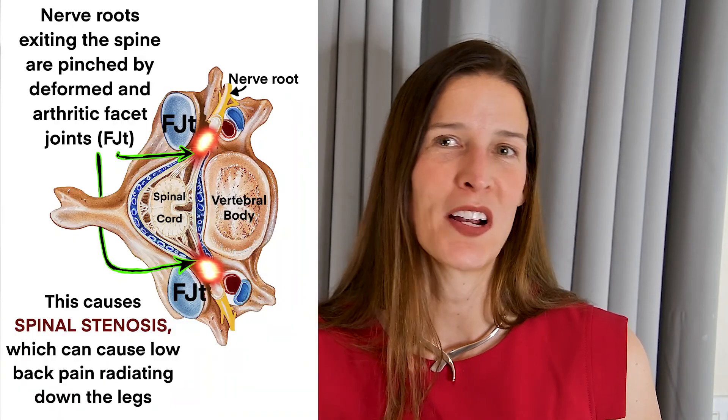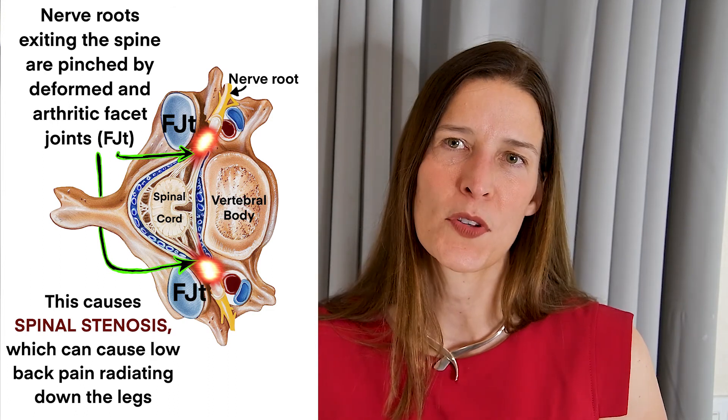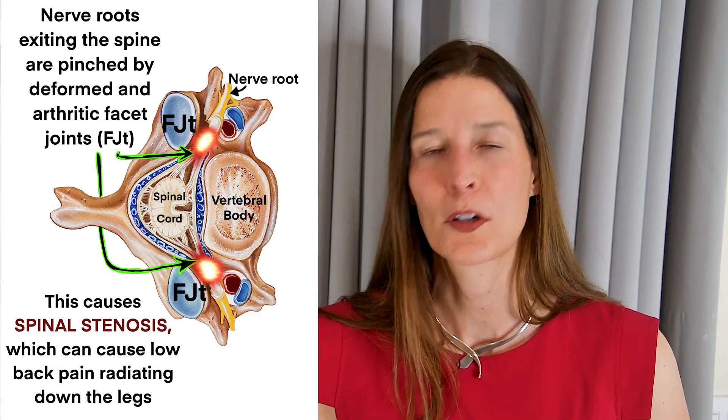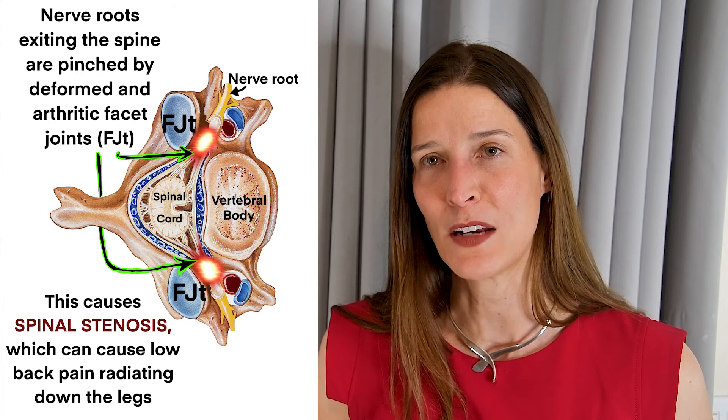In osteoarthritis, abnormal bony structures called osteophytes start to appear on the surfaces of the vertebral body and near the openings in the spine where the nerve roots exit. These openings are called the intervertebral foramen. Osteophytes — an interesting word that actually means 'bony plant' — can compress the exiting nerve roots and decrease the diameter of the spinal canal, sometimes causing pinching or compression of the spinal cord. Sometimes this condition, called spinal stenosis, can be painful and is a common cause of low back pain radiating down the legs.